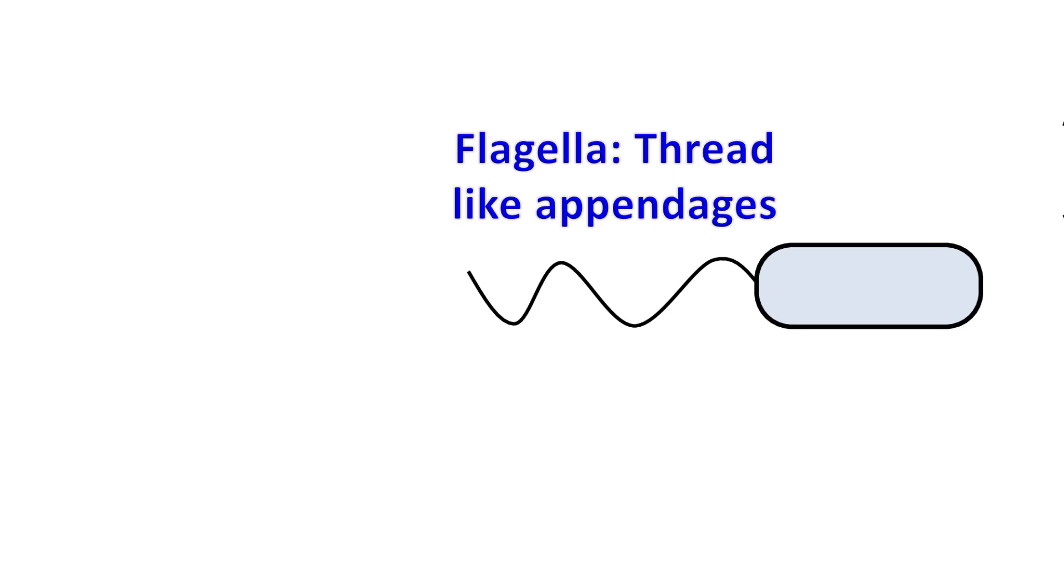Prokaryotic cells use flagella or flagellum for locomotion. Flagella are thread-like appendages that extend from the plasma membrane to the extracellular environment.